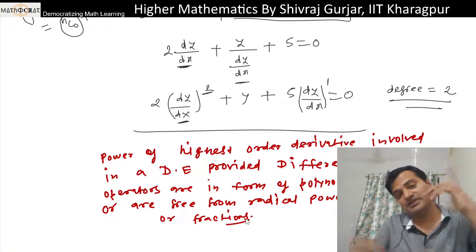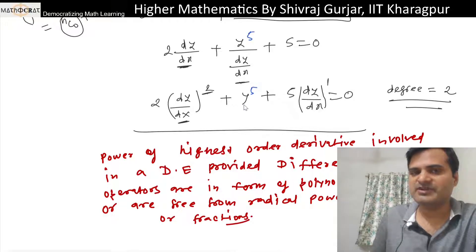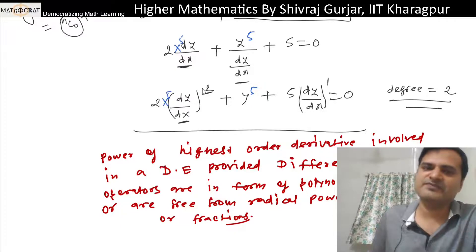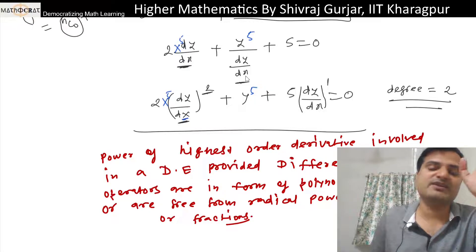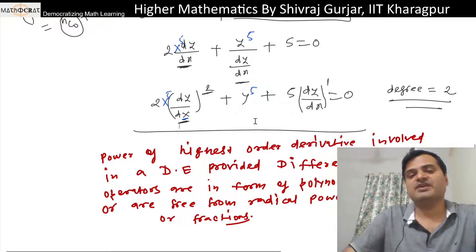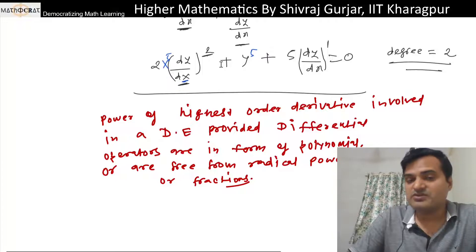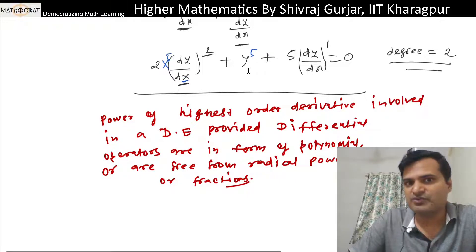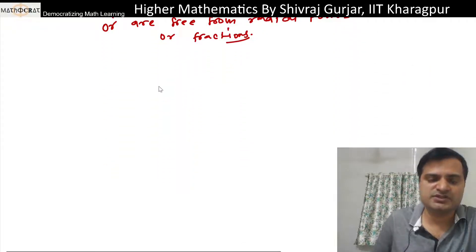We only need to check that the differential operators do not have radical or fractional powers. If that condition is satisfied, then the degree is defined. If we cannot put the differential operators into polynomial form, then the degree is not defined. For example, consider: dy/dx + sin(d²y/dx²) = 0.